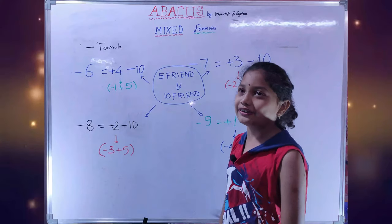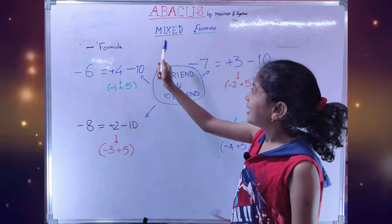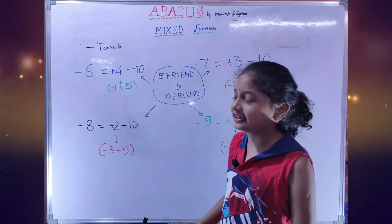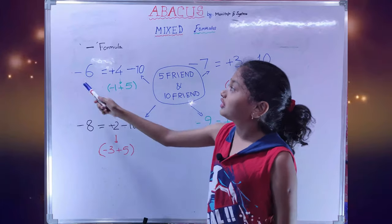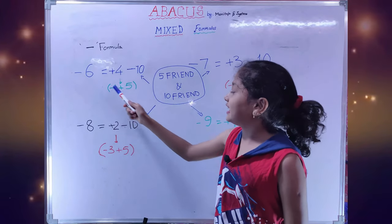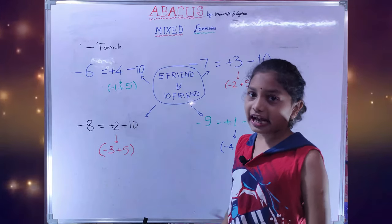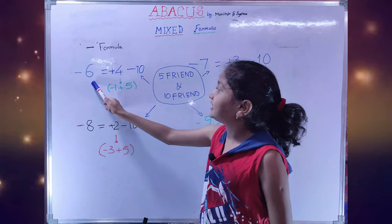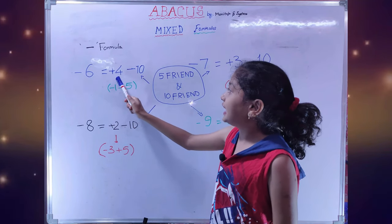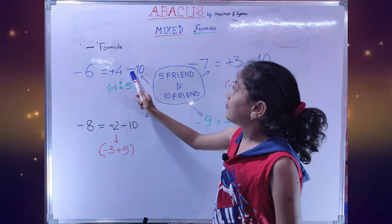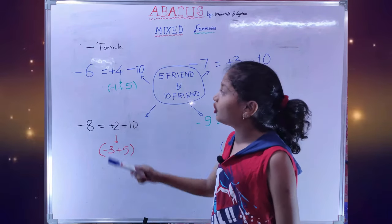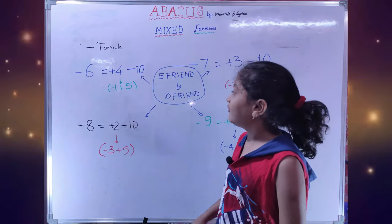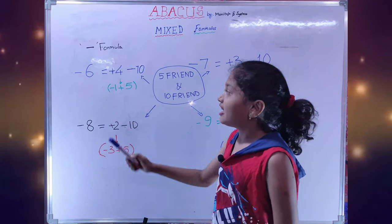In this video we are learning mixing formulas for subtraction. To subtract, we use 10 friends. Minus 6 is equal to plus 4 minus 10. When we don't have plus 4 to add, we will use 5 friends.